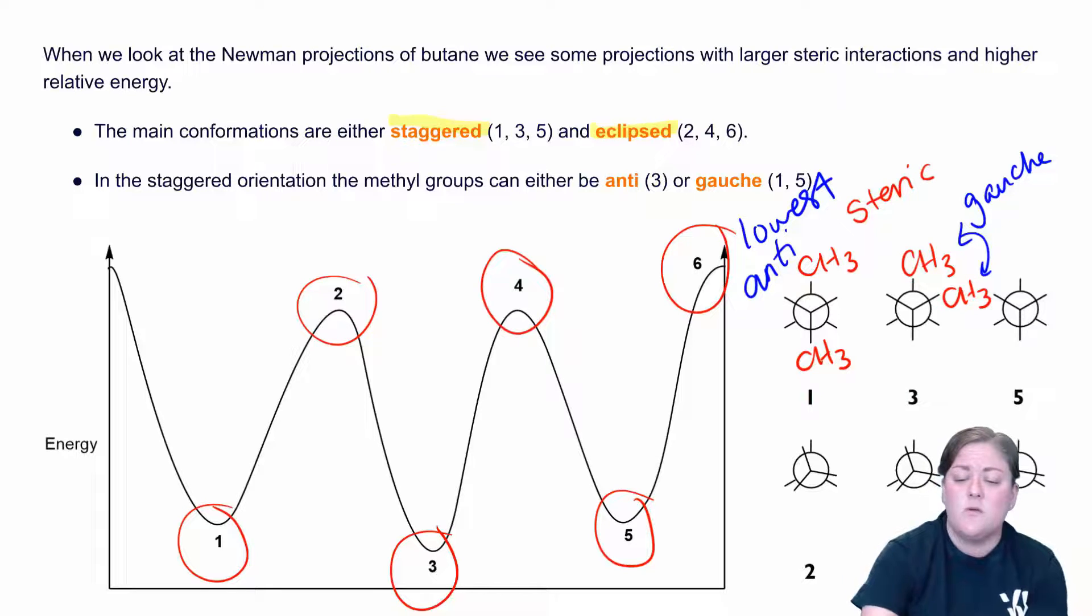It's also worth noting that when we're thinking about the absolute highest energy configuration for the eclipsed, we'll see that when the two large groups are sitting right on top of each other. So group number two as I've drawn here would have the highest energy.